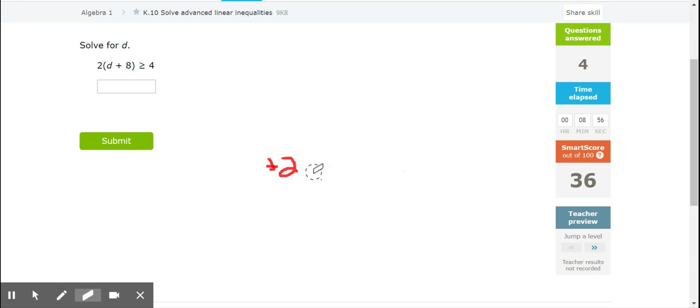Now, okay, so we've got a parentheses here. So once again, we would distribute across, and that would give us 2D plus 16 greater than or equal to 4. We would subtract 16 from both sides, and 2D is greater than or equal to negative 12.